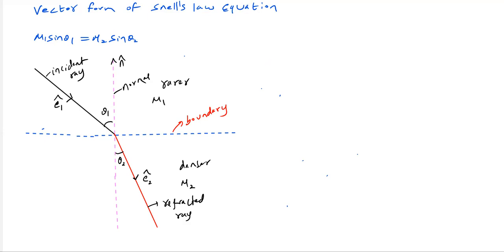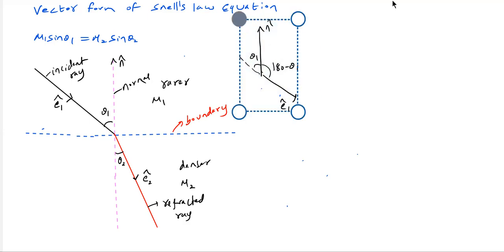Let's start. Some assumptions we'll make. This will be n̂ and Ê₁. What is the angle between them? Initially the incident ray was making θ₁ with the normal. So what is the angle between n̂ and Ê₁? It will be 180 minus θ₁.